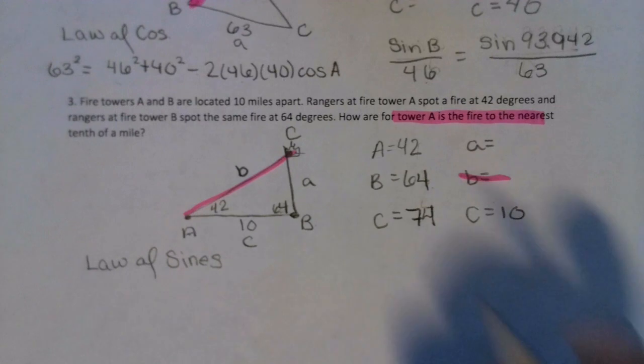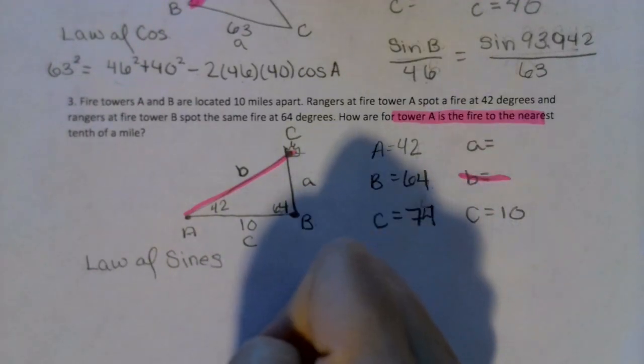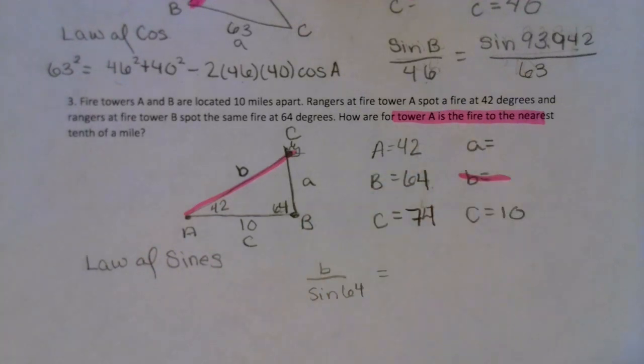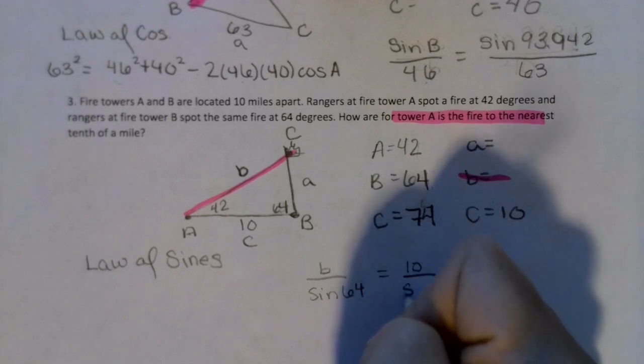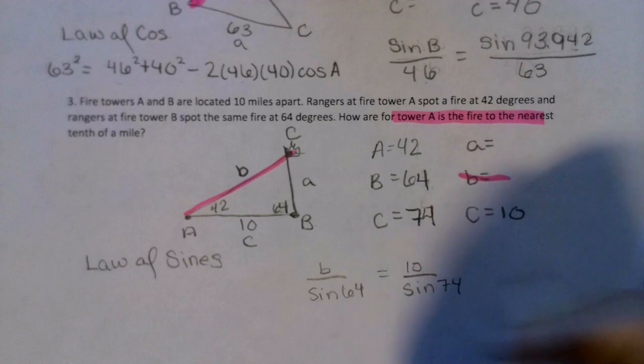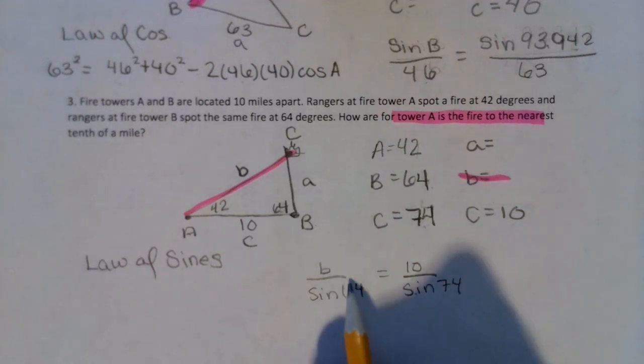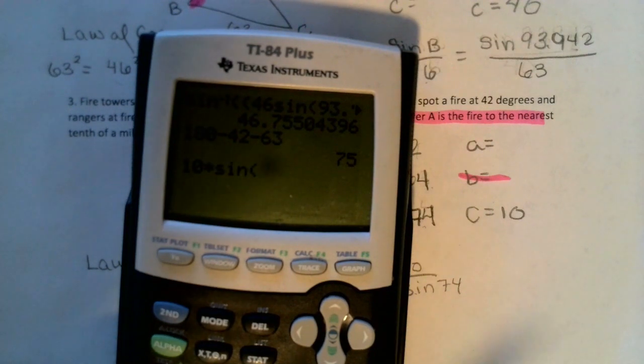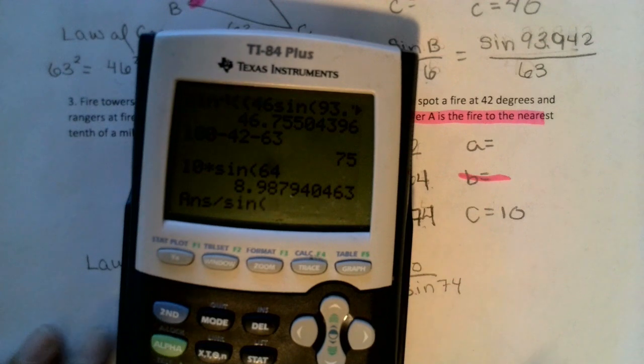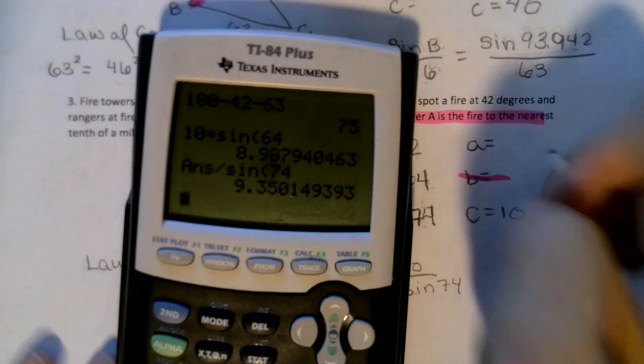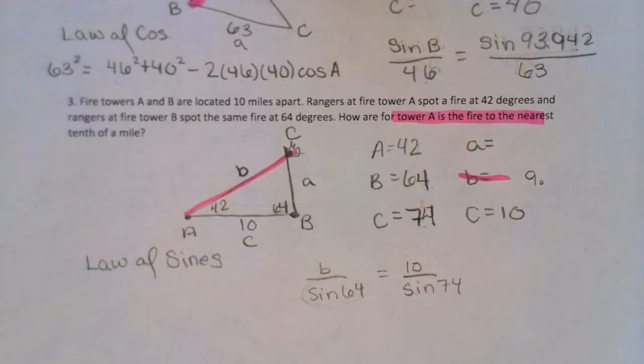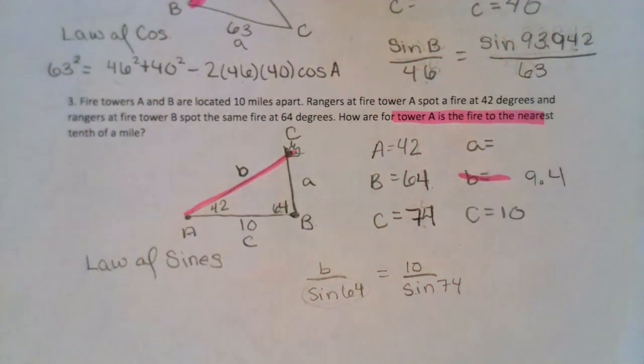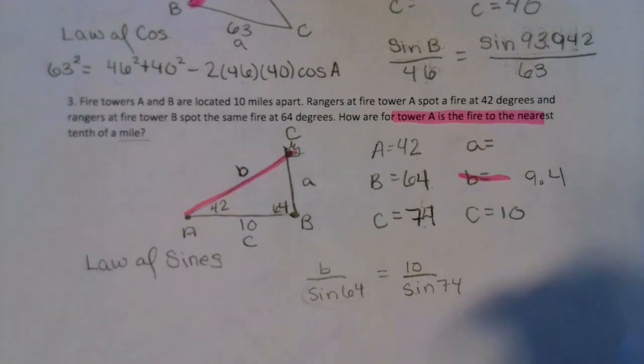Alright, now we have our pair to make our Law of Sines. So we are trying to find side b, which means underneath it would be sin64 equals, and then we are going to use our pair, which is 10/sin74. Remember that our angles will always go with our trig function. So in this case, all we have to do is multiply it by sin64. So 10 times sin64, divided by sin74. So that means that the fire is 9 point... Now really quickly, it said to the nearest tenth of a mile. So that 5 would bring that 3 up. And again, we are doing a story problem. So we need our units, and we are in miles.